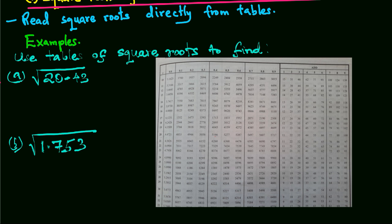For example, we want to find the square root of 20.43. If you look at our square root tables, we have a sample here. Our number is 20.43, so in the main column we move to 20.4, which gives us 4.5166.